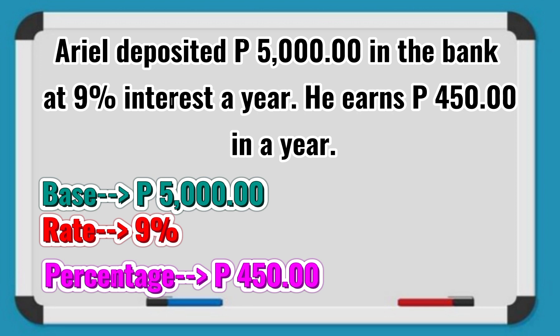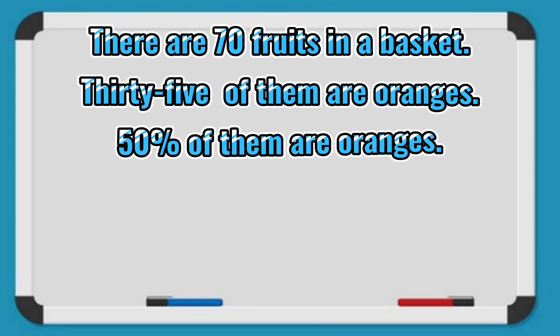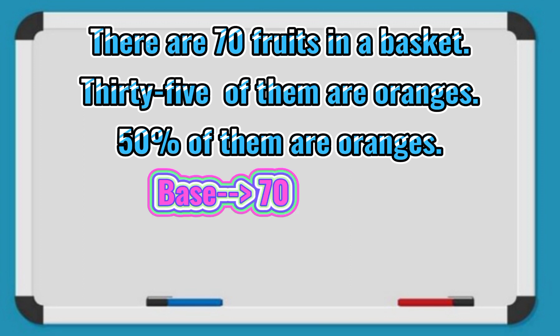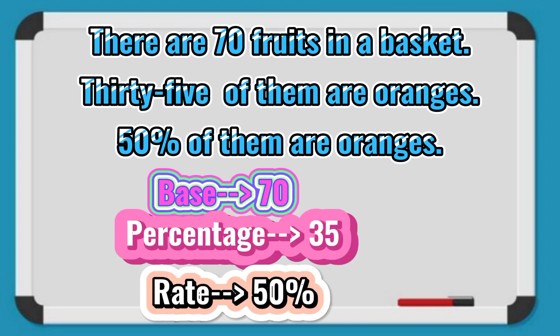Let's try another example. There are 70 fruits in a basket; 35 of them are oranges, and 50% of them are oranges. The base is 70, the percentage is 35, and the rate is 50%.